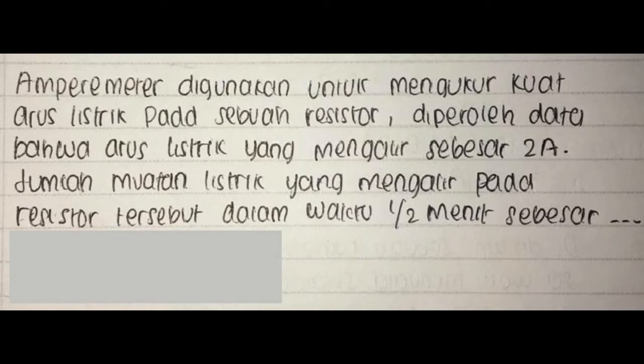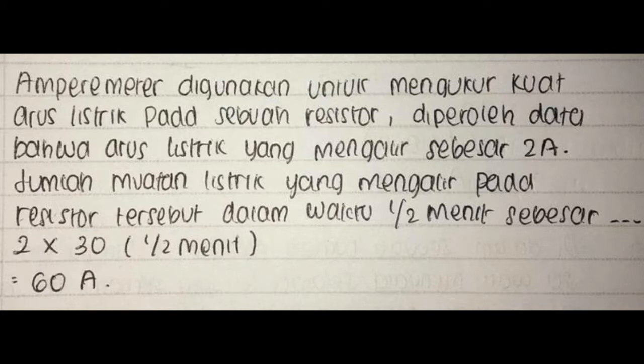Soal 6: Ampere meter digunakan untuk mengukur kuat arus listrik pada sebuah resistor. Diperoleh data bahwa arus listrik yang mengalir sebesar 2A. Jumlah muatan listrik yang mengalir pada resistor tersebut dalam waktu setengah menit sebesar? Jawaban: 2 dikali 30 (dari setengah menit) sama dengan 60 coulomb.